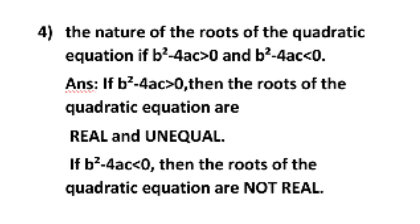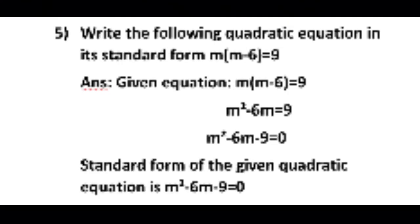Now question number 5: write the following quadratic equation in its standard form. M multiplied by M minus 6 is equal to 9. On the left-hand side, first simplify: M multiplied by M is M square, minus 6 multiplied by M is minus 6M, equal to 9. In the next step, bring 9 from the right-hand side to the left-hand side: M square minus 6M minus 9 equal to 0, which is in the standard form. Therefore, the standard form of the given quadratic equation is M square minus 6M minus 9 equal to 0.